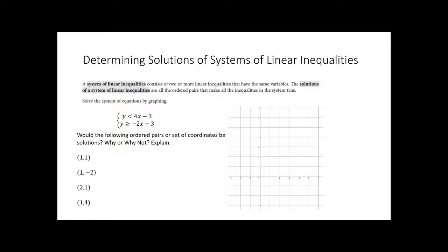Determining solutions of systems of linear inequalities. A system of linear inequalities is a lot like any other system, except it consists of two or more linear inequalities that have the same variables. And we're going to be playing with x and y. The solutions of the systems of linear inequalities are all of the ordered pairs that make the inequality system true. So let's say we have y is less than 4x minus 3. These are in trees. My initial value in my function is negative 3. So on my graph, my intercept will be at 0, negative 3.